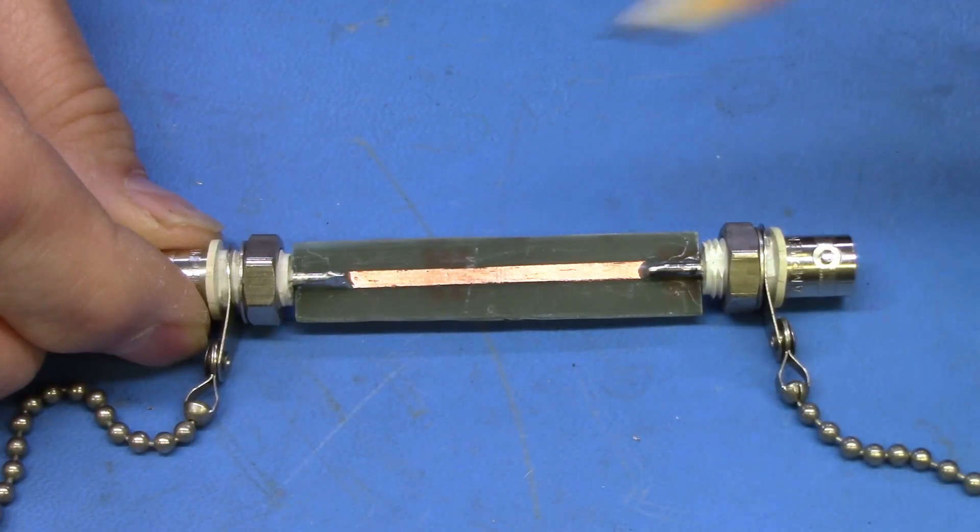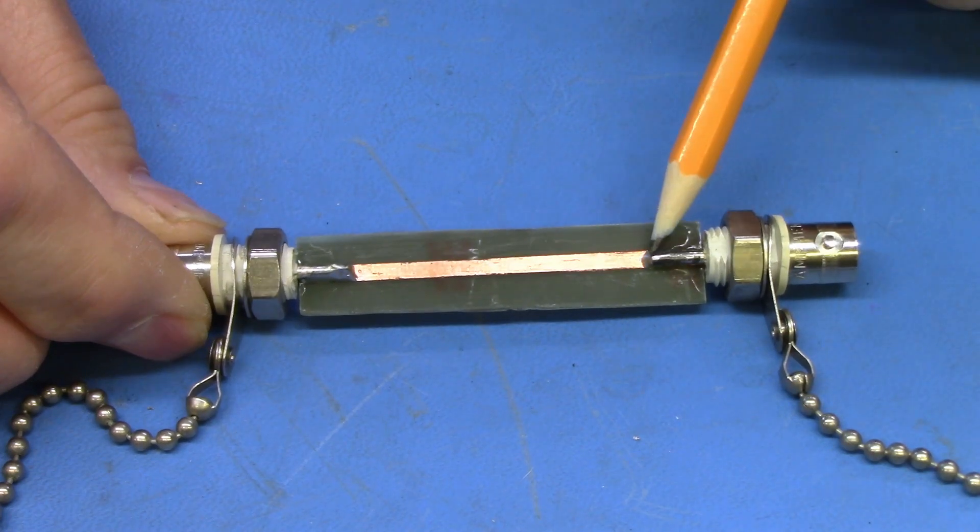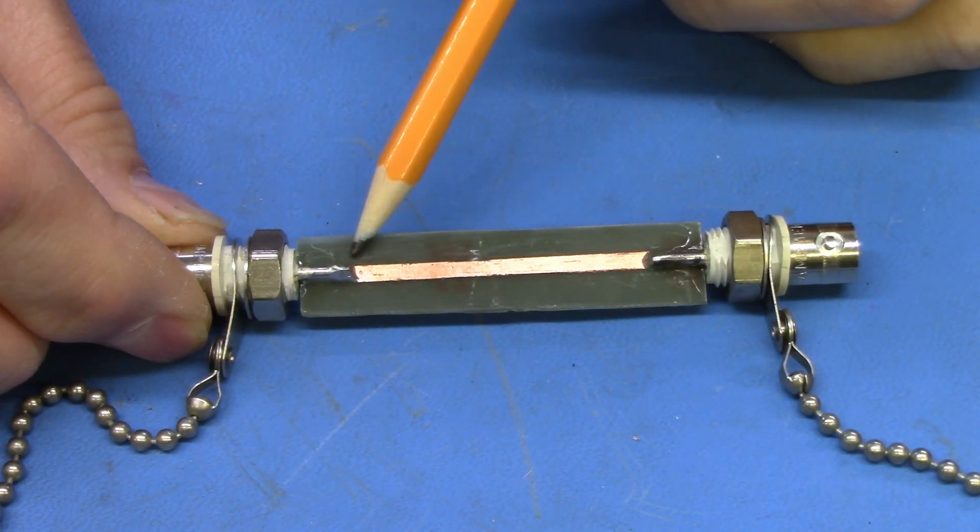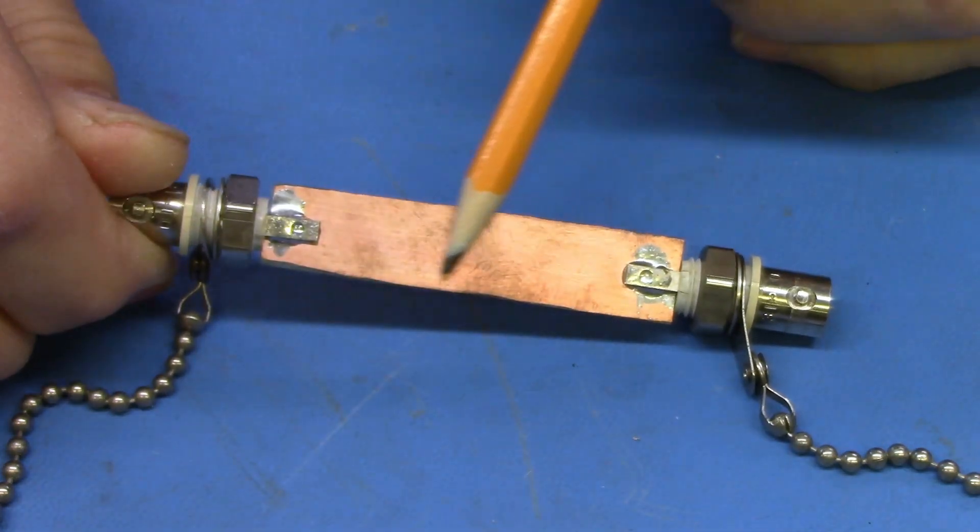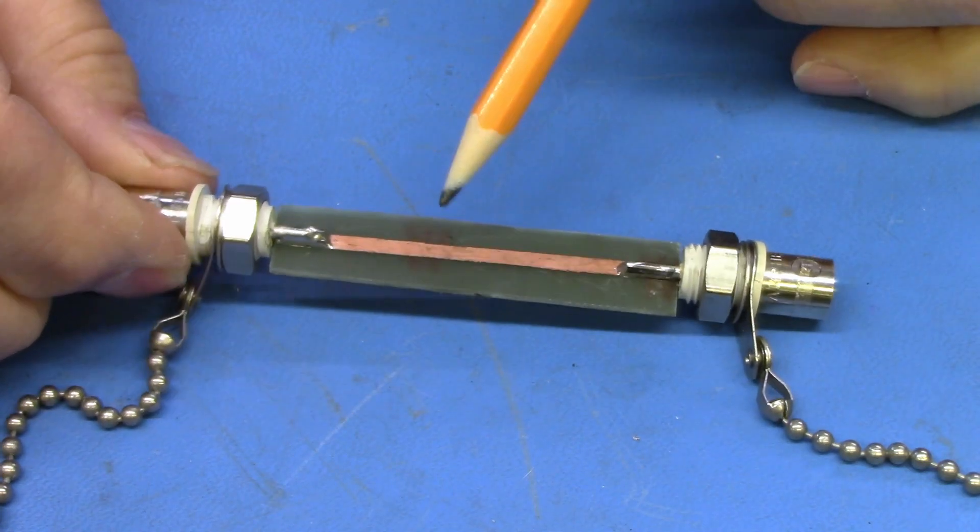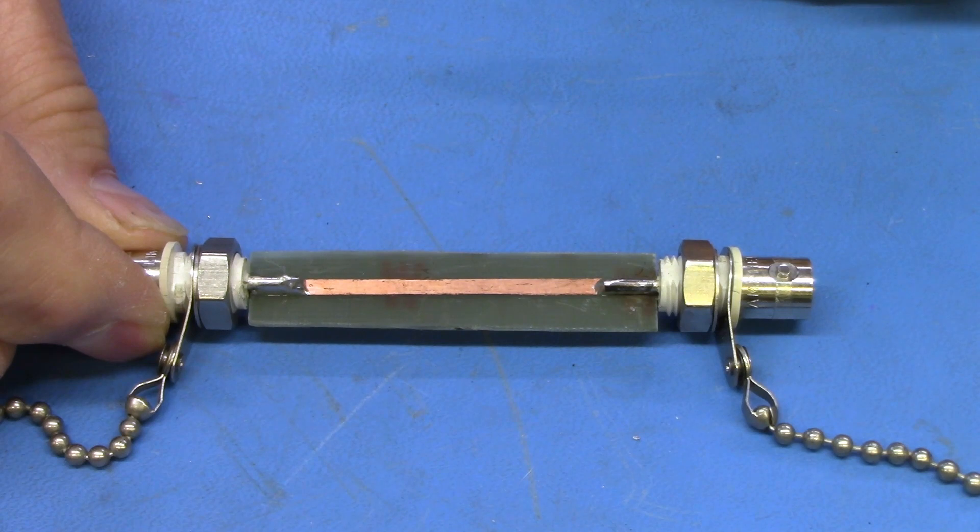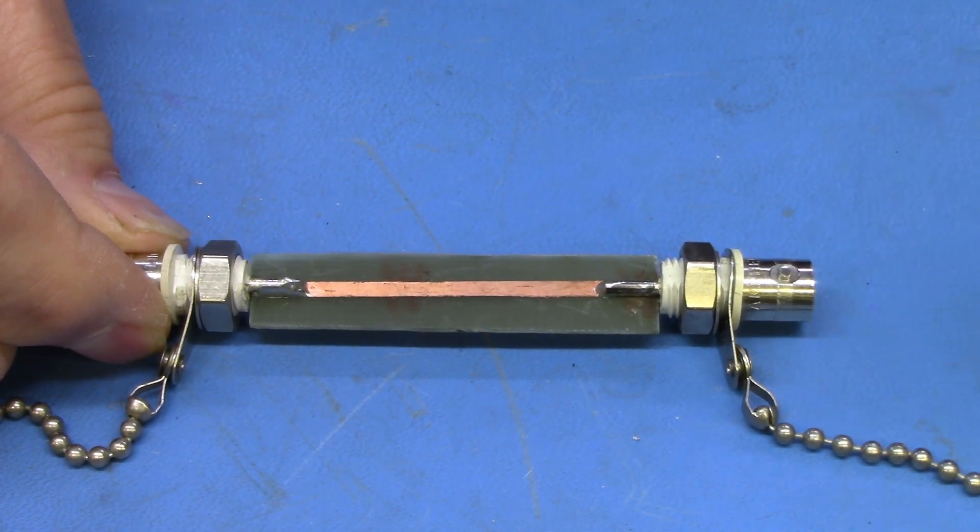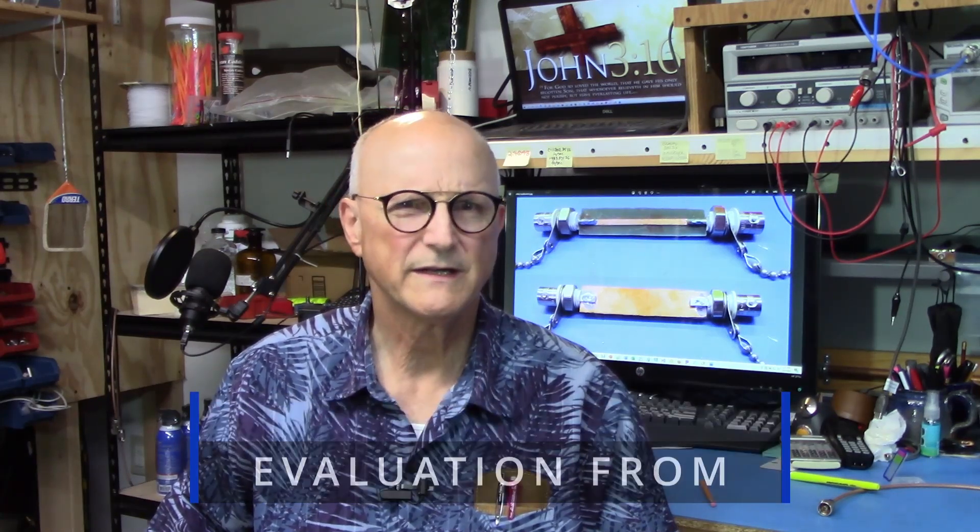Here you see my first ever microstrip line. You can see the single lonely trace on the top side of the board and the grounded copper pour on the bottom side of the board. At either end of this single lonely trace, I soldered some BNC connectors to aid in testing. So the question is, how well does this work? I'm going to evaluate this from one megahertz to one gigahertz. I've carefully calibrated my VNA. I've connected port one of my VNA to the connector at one end of the board and my calibration standard to the other end of the board.